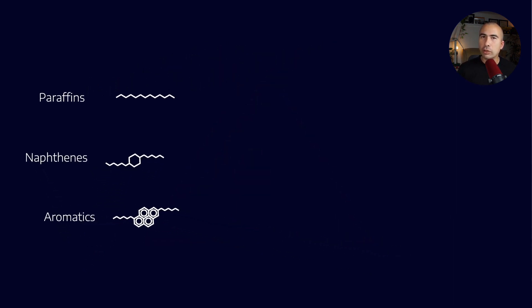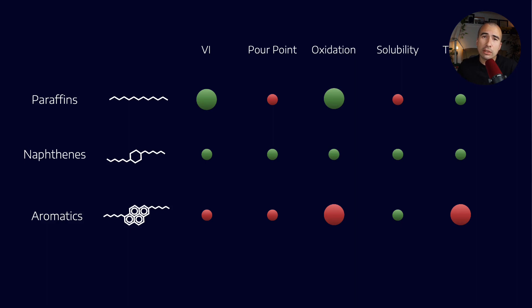These three different types of molecules give us different kinds of properties, and they have both strengths and weaknesses. The paraffins, for example, are very good in terms of viscosity index, but tend to suffer from poor point, because paraffins are wax-type molecules. The naphthenes do pretty well across the board, and the aromatics obviously have some strengths and weaknesses too, notably their toxicity.